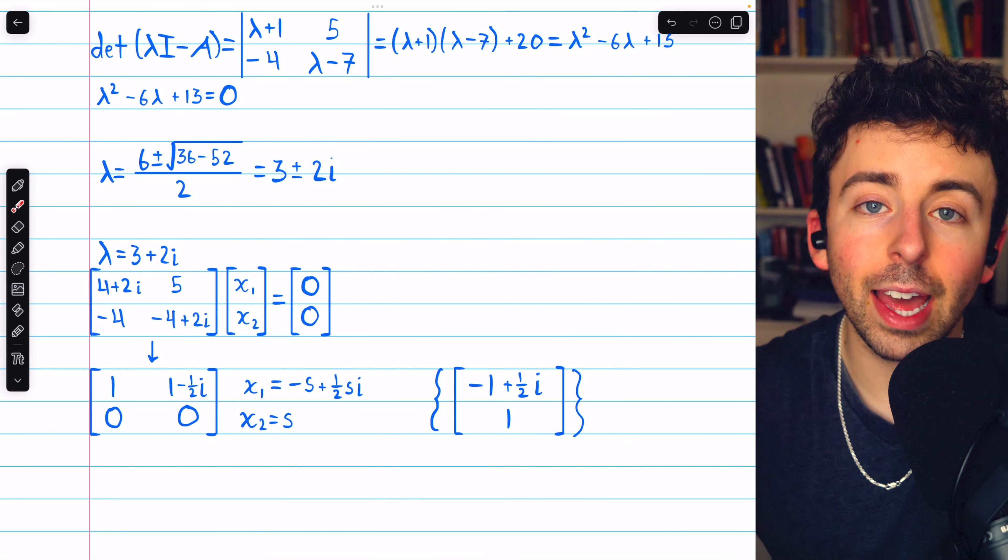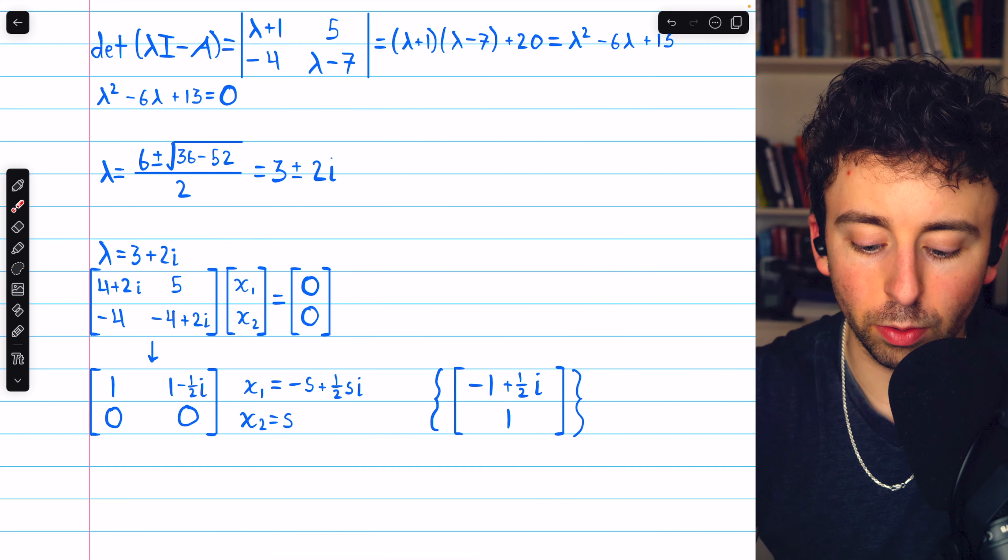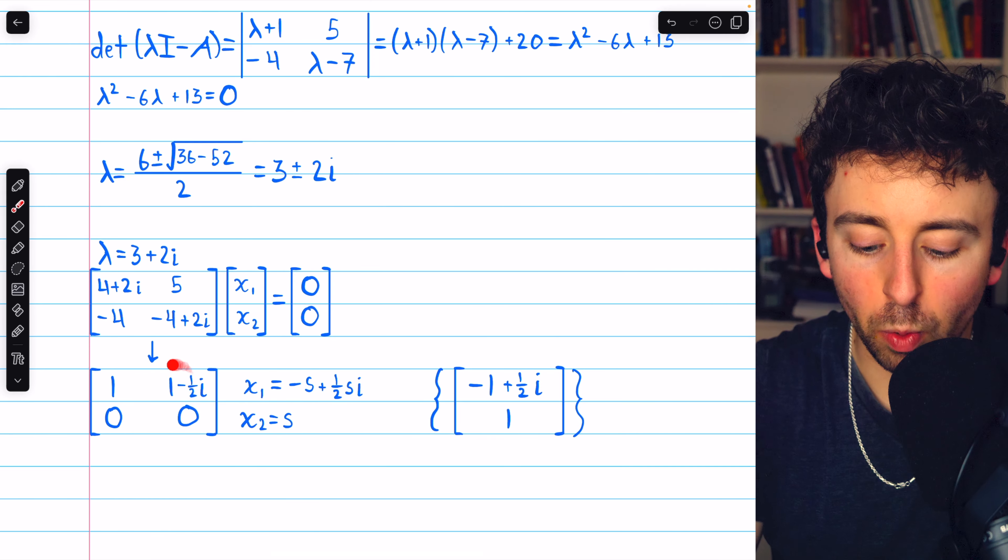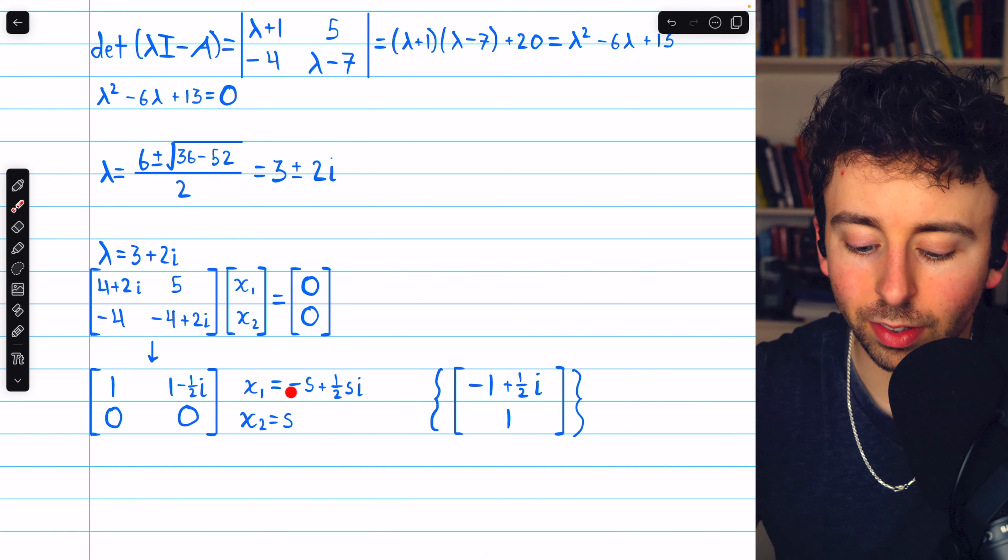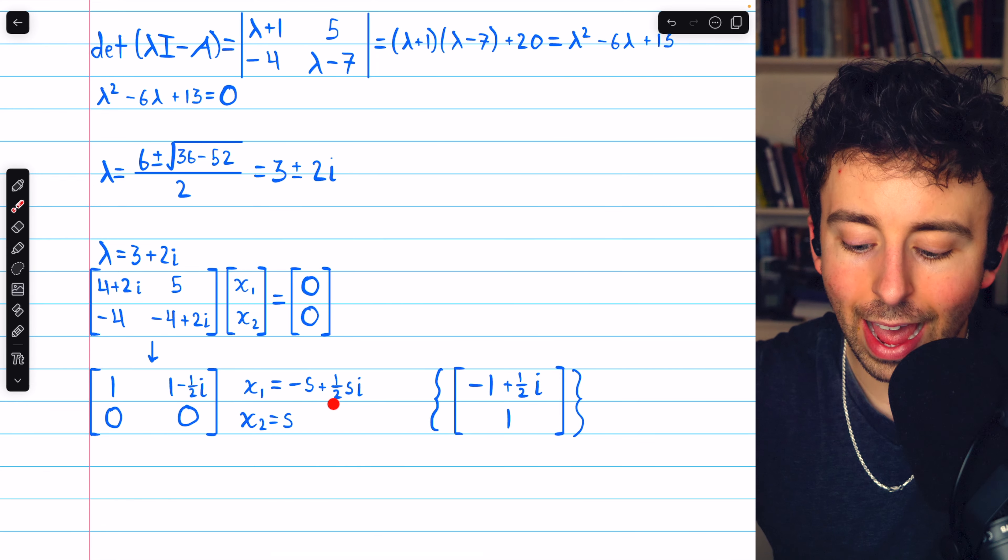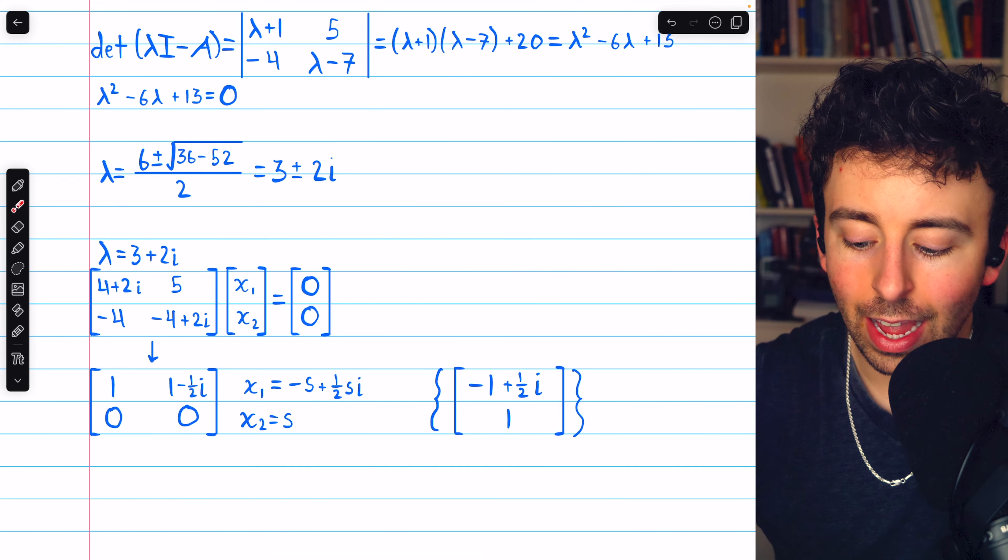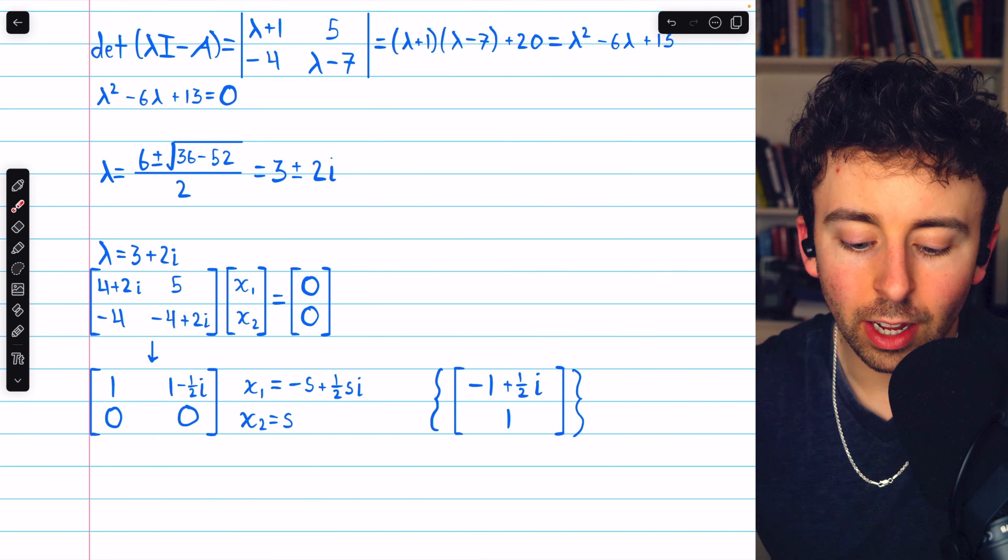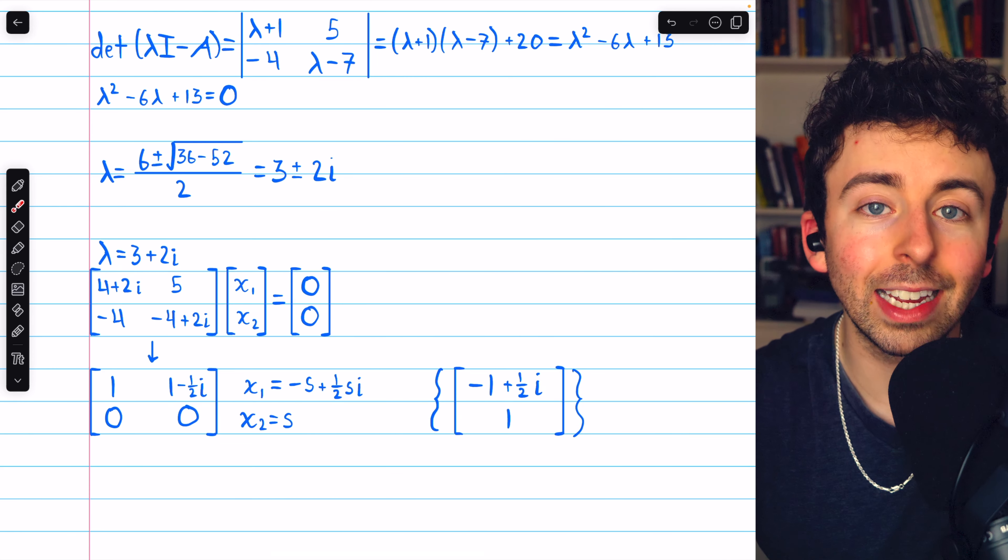So, then we have that x2 is a free variable, since there's no leading entry in column 2. Let's say x2 equals s. And then from row 1, we have that x1 equals negative s plus one-half si. And so, this is a basis for the eigenspace corresponding to this eigenvalue.